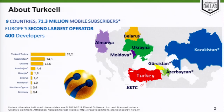A few words on Turkcell where I'm working. Turkcell is a mobile telecom operator operating in nine different countries and having 71 million subscribers, making it the second biggest operator in Europe. In our R&D department there are around 400 developers. Most of them use the Spring Framework for implementing their software — for eight or nine years already.